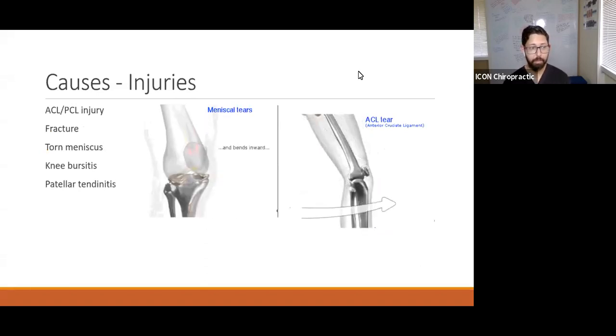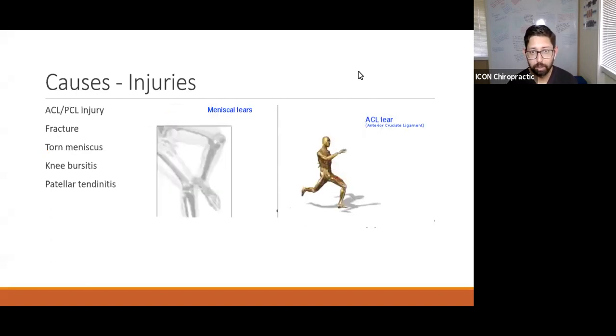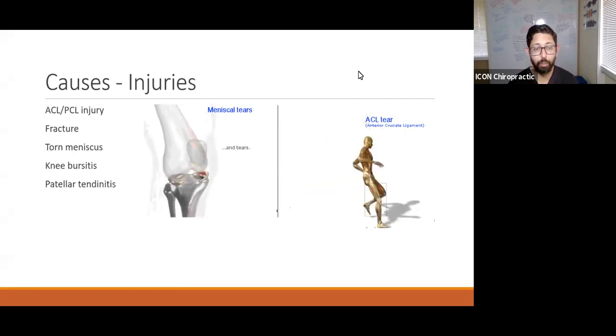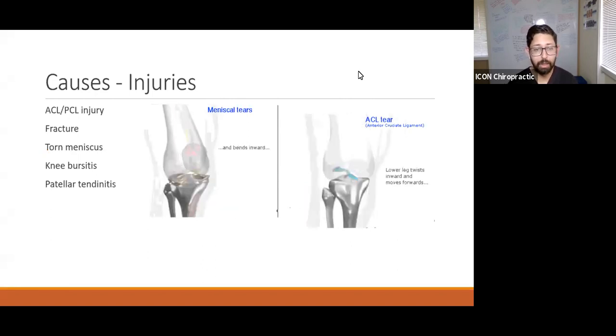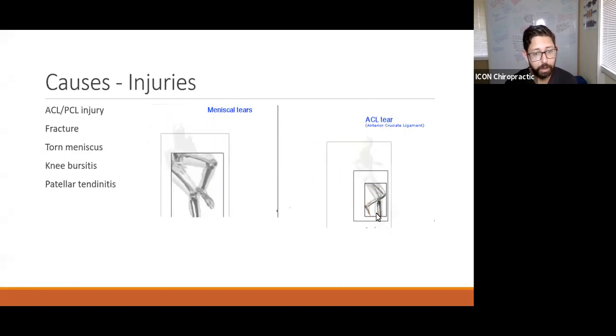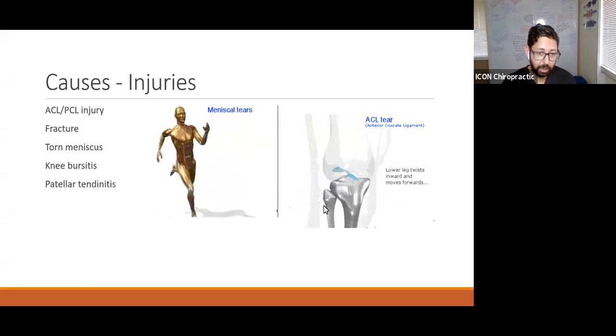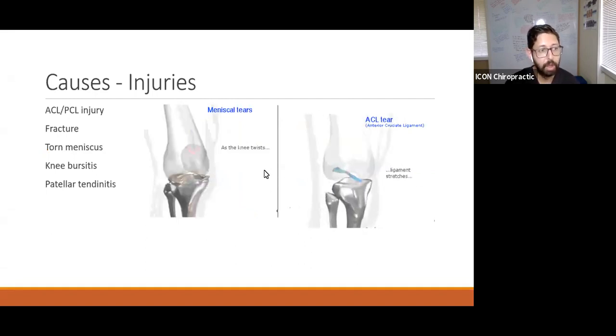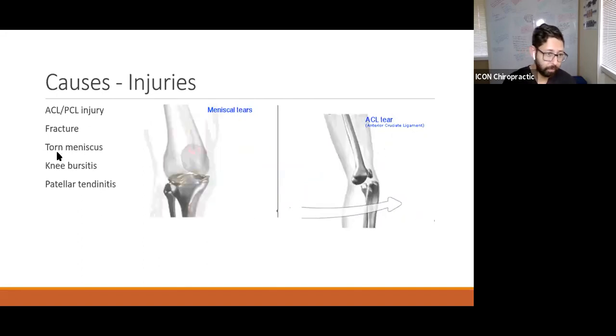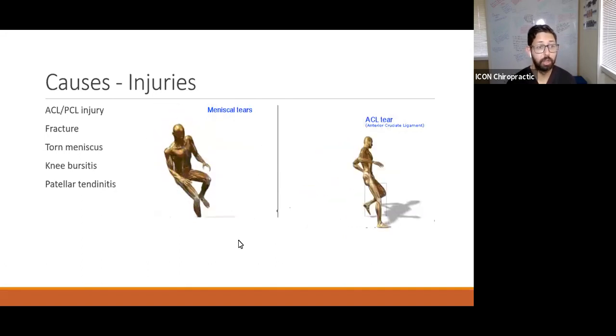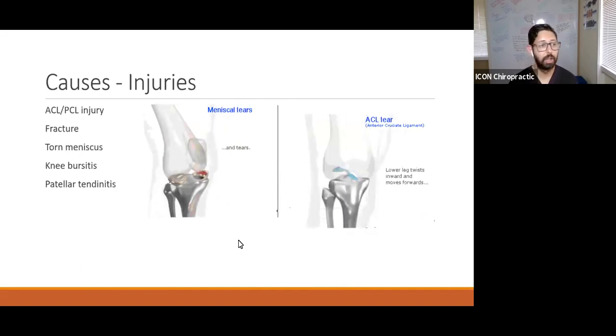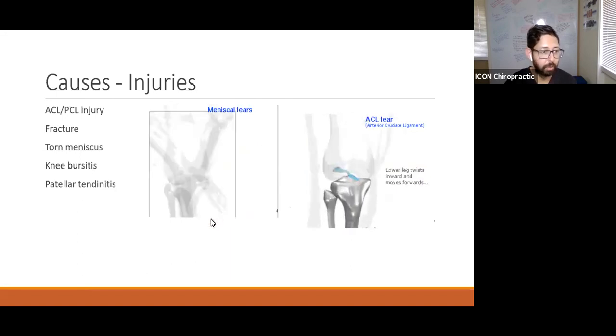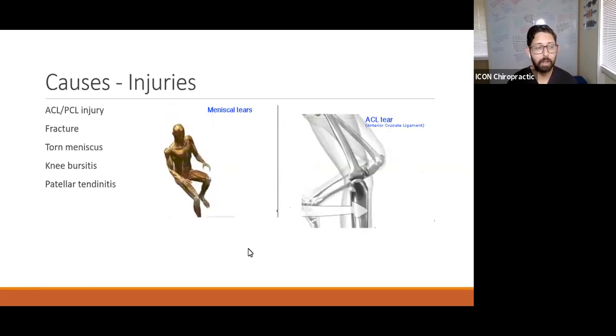Some of the injuries we talked about - the ACL and PCL are those ligaments holding bones together. Very common sports injury that occurs when there is direct impact to the knee, or if you're running and you stop really quick, your shin can continue to move forward while the rest of your body stops, causing a tear. You can have fractures, torn meniscus - this happens a lot in sports where there is duking, running real fast, stopping, and changing directions. There's also knee bursitis and patellar tendonitis.